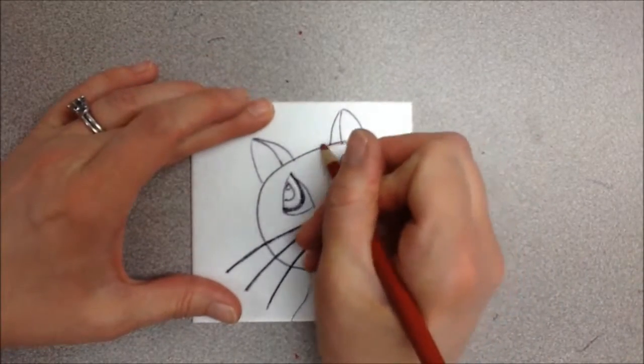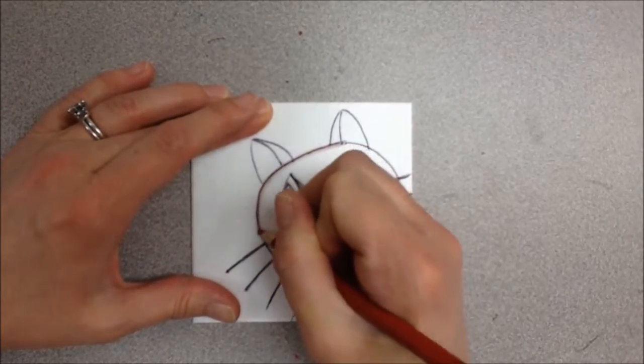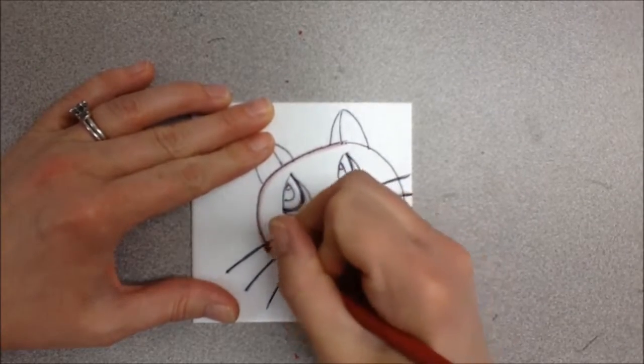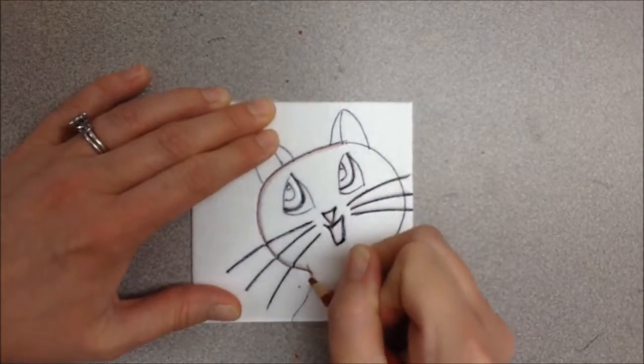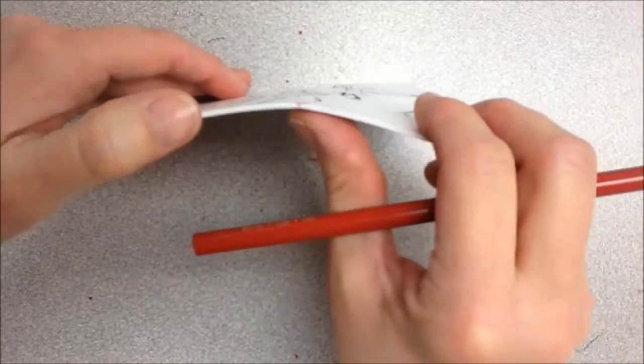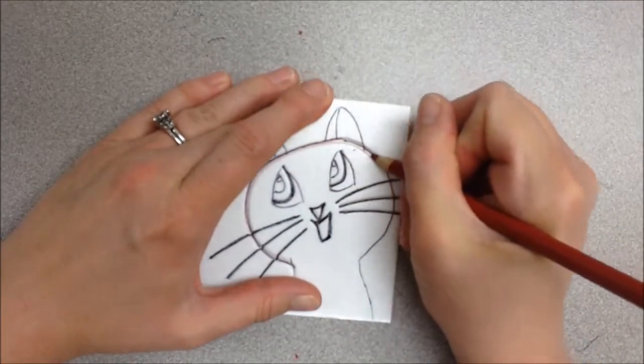Now I'm going to trace those lines that I want thicker around my cat. Sometimes you can just do one smooth pass. Sometimes you'll want to go back over it again. And you'll be able to feel this and see this with your fingers. It's hard to see on the screen, but you can see there's an indentation that's there where the foam has been smooshed down.